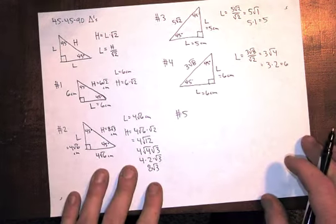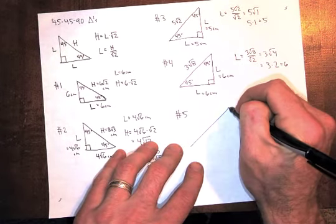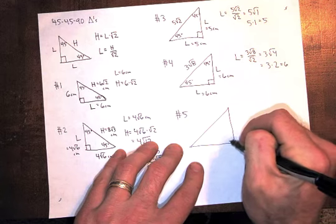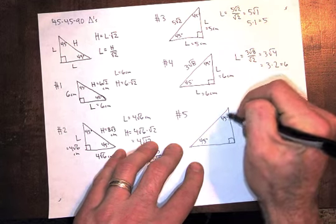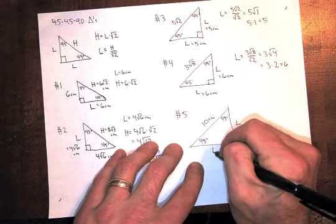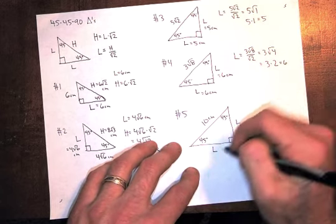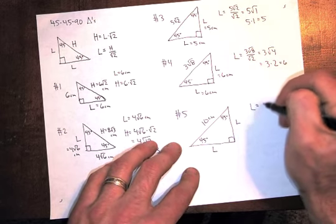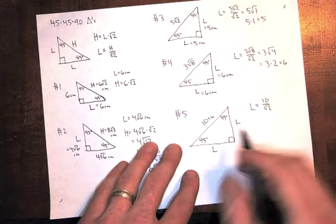Last example. Maybe the trickiest one. Let's say you have 45-45. Let's say the hypotenuse is 10. Find the other two sides. So we're trying to find the legs. L equals the hypotenuse 10. We're divided by square root of 2. Just using the formula.